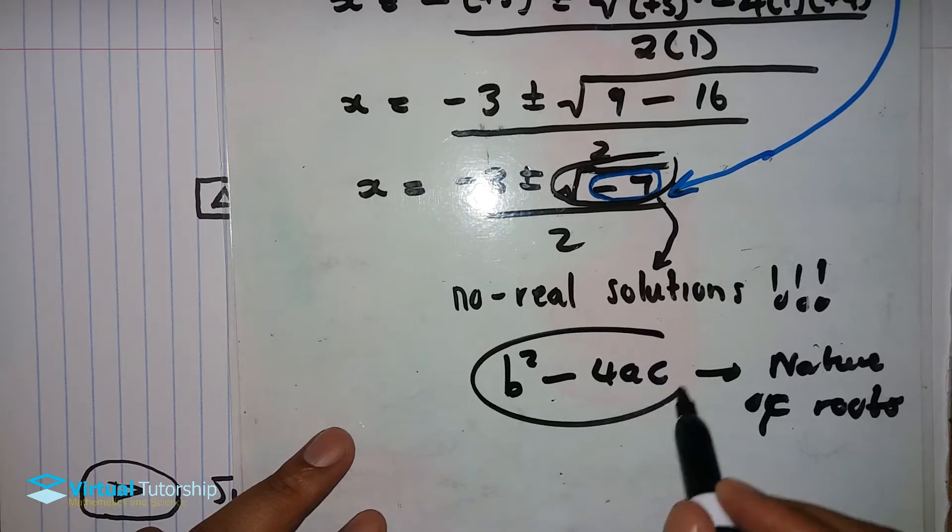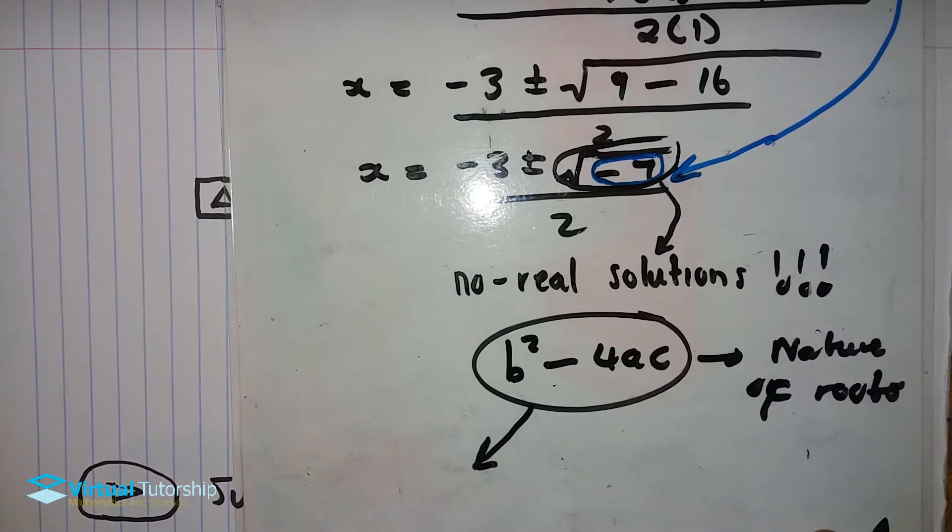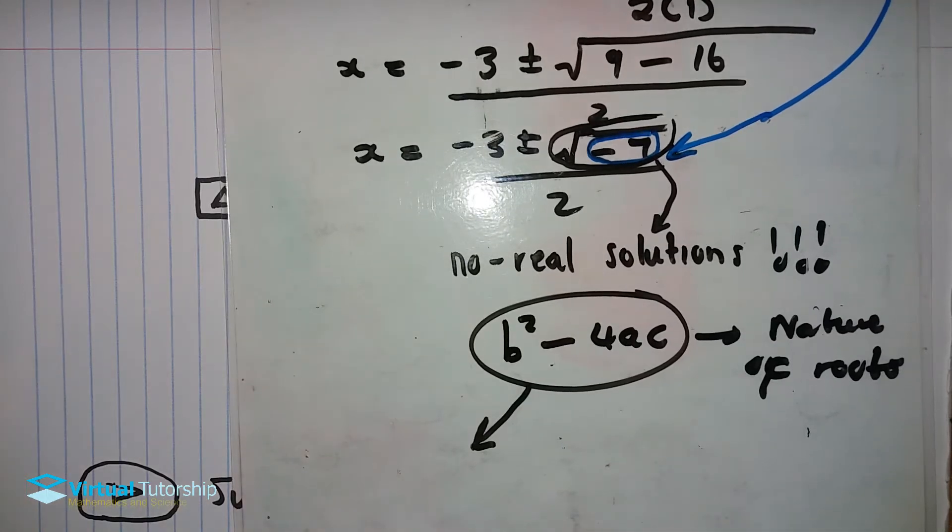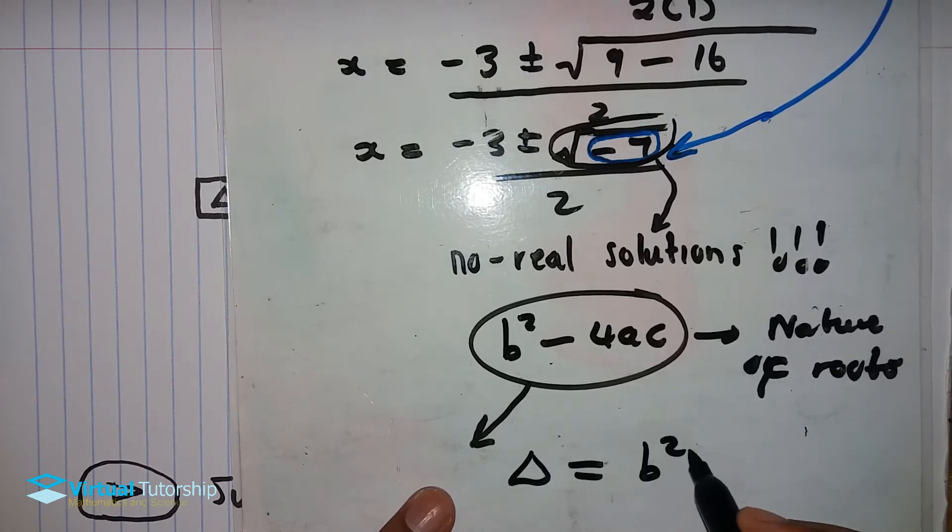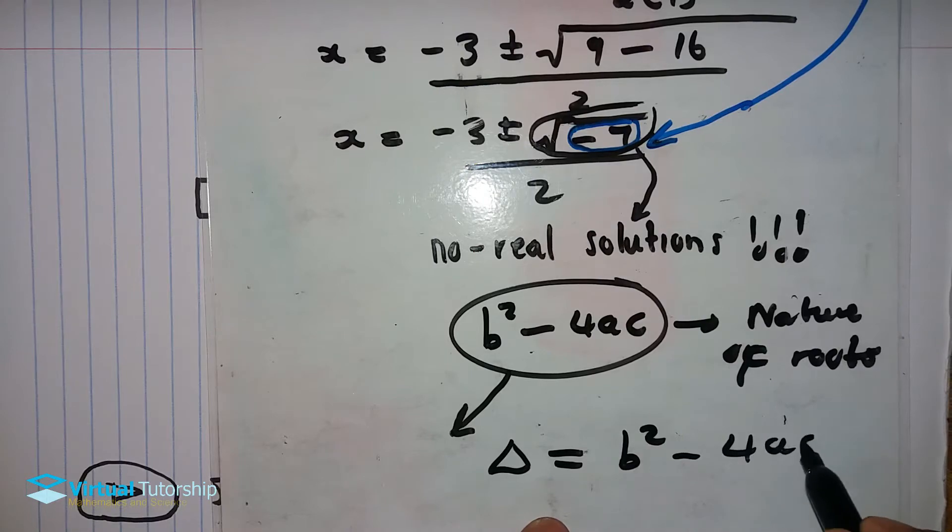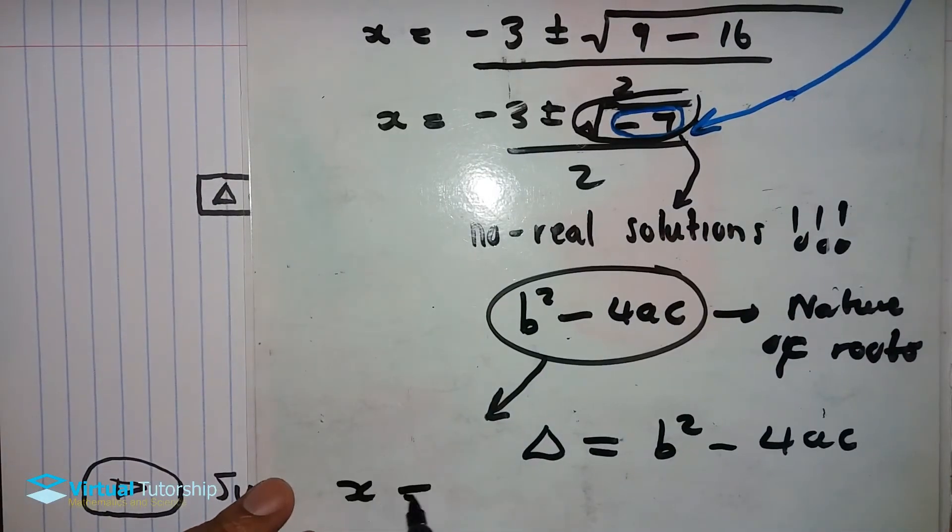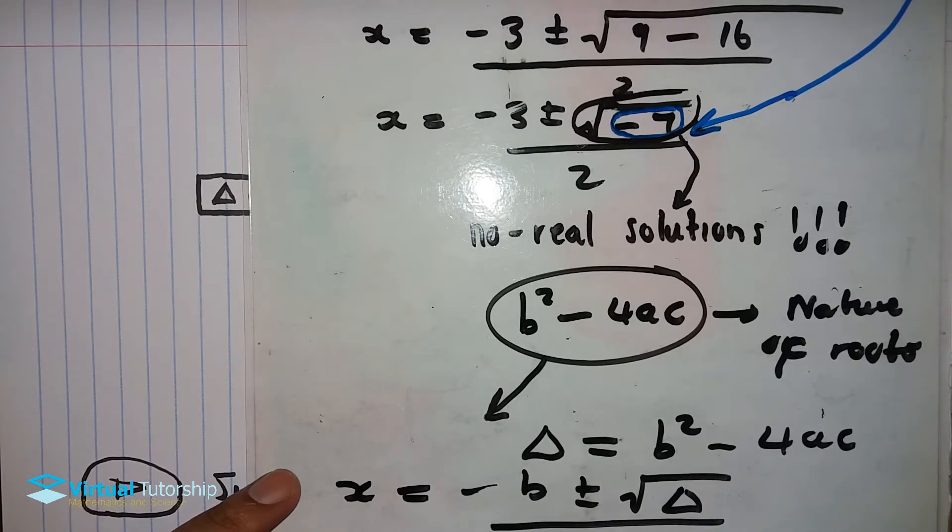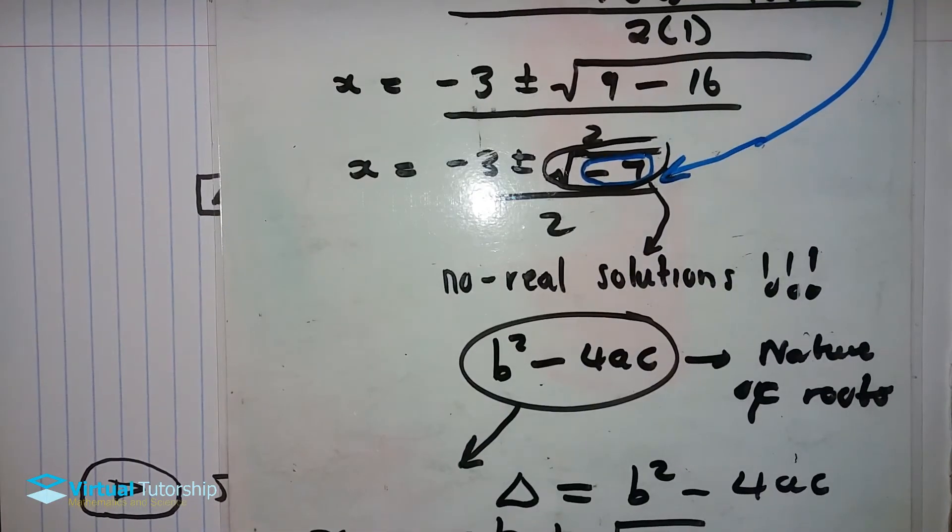This value here. In mathematics, this b squared minus 4ac has an important role in a quadratic equation. This b squared minus 4ac represents delta. So delta is equal to b squared minus 4ac. We can rewrite that quadratic formula. X now becomes minus b plus minus square root of delta over 2a. Sometimes b squared minus 4ac is delta.